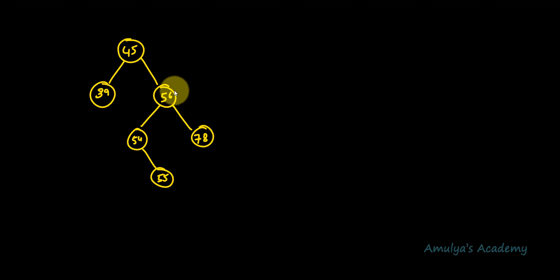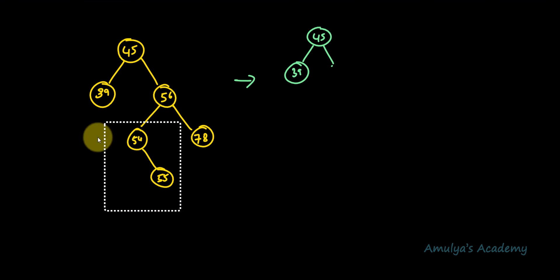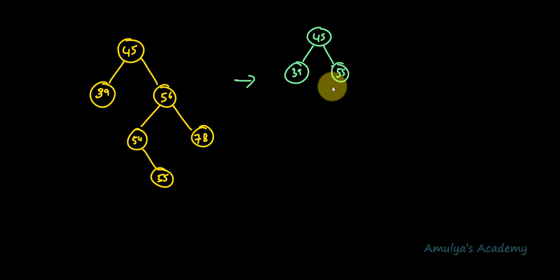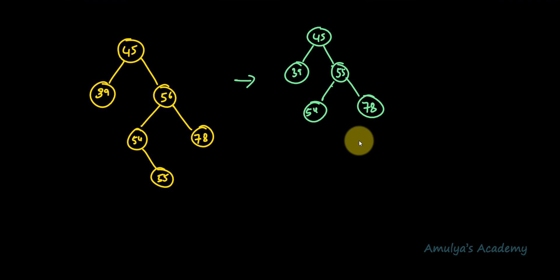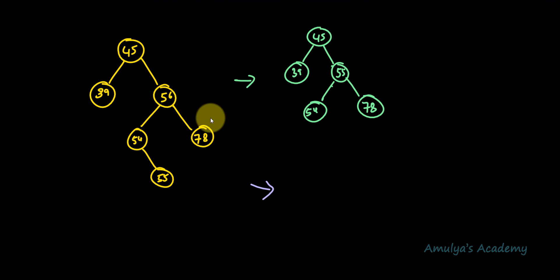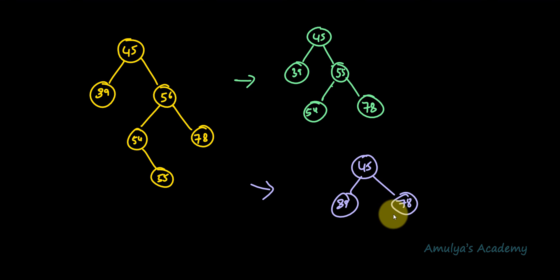Let me take another example. If I want to delete 56, after finding this node I can replace it with either the largest value of the left side or the smallest value in the right side. The largest value in the left side is 55, so 55 comes here and we keep 54 below it. Alternatively, we can take the smallest value in the right subtree to replace the deleted node, giving us another valid result.